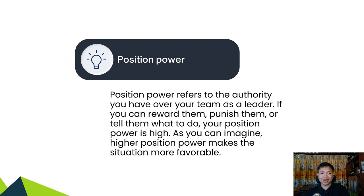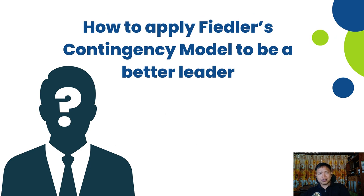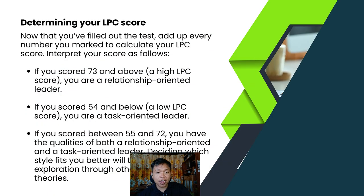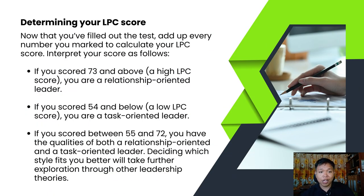Position power refers to the authority you have over your team as a leader. If you can reward them, punish them, or tell them what to do, your position power is high. Higher position power makes the situation more favorable. Now, to apply Fiedler's contingency model to be a better leader, the first step is to understand your leadership style. In order to identify your natural leadership style, we return to the LPC scale. To determine your score: if you scored 73 and above, a high LPC score, you are a relationship-oriented leader. If you scored 54 and below, a low LPC score, you are a task-oriented leader.